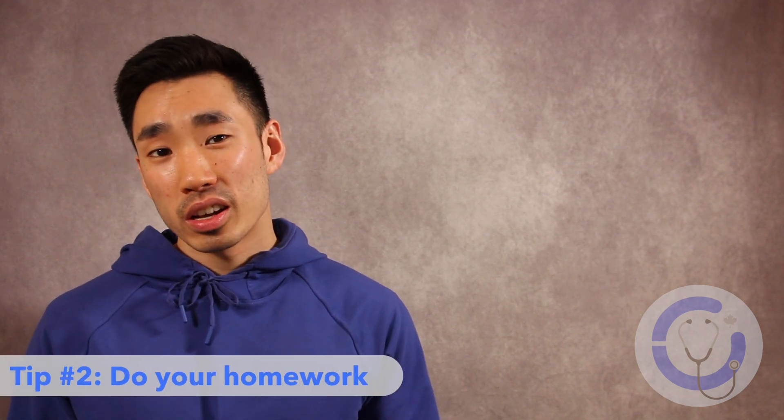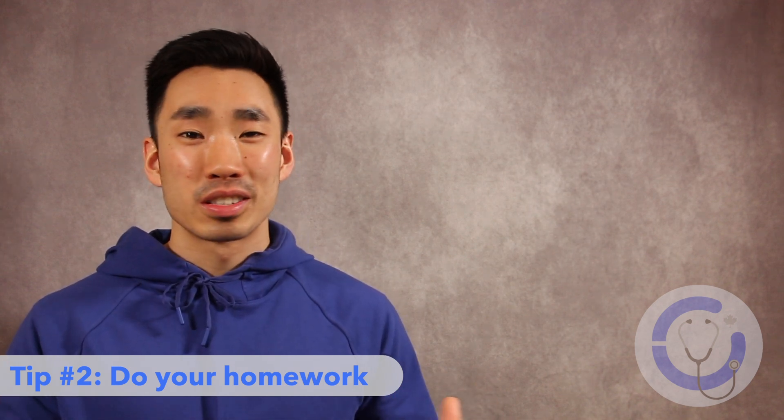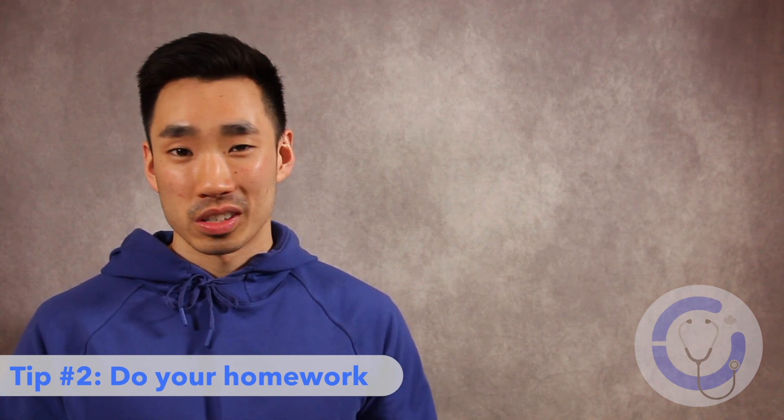Tip number two is to read up on the principal investigator's work. Once again, these principal investigators get thousands of emails every single month for students asking them for research opportunities. And one way to really make yourself stand out is to actually go in, look at the areas of research that that principal investigator is interested in, potentially look at some of the methods or resources that they have in their lab, and basically just summarize it and express your interest in whatever area of work that the lab does which is most interesting to you.